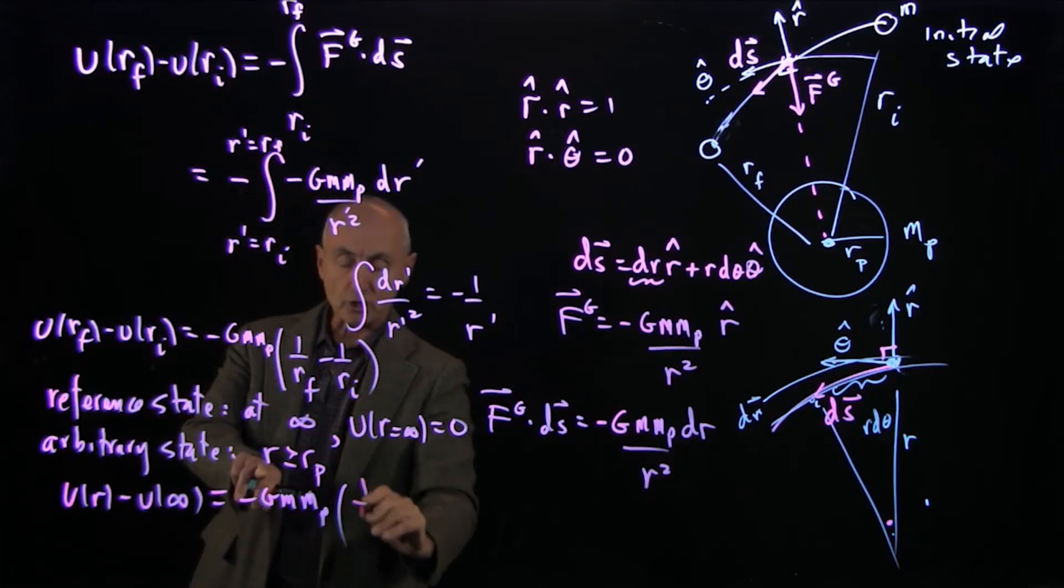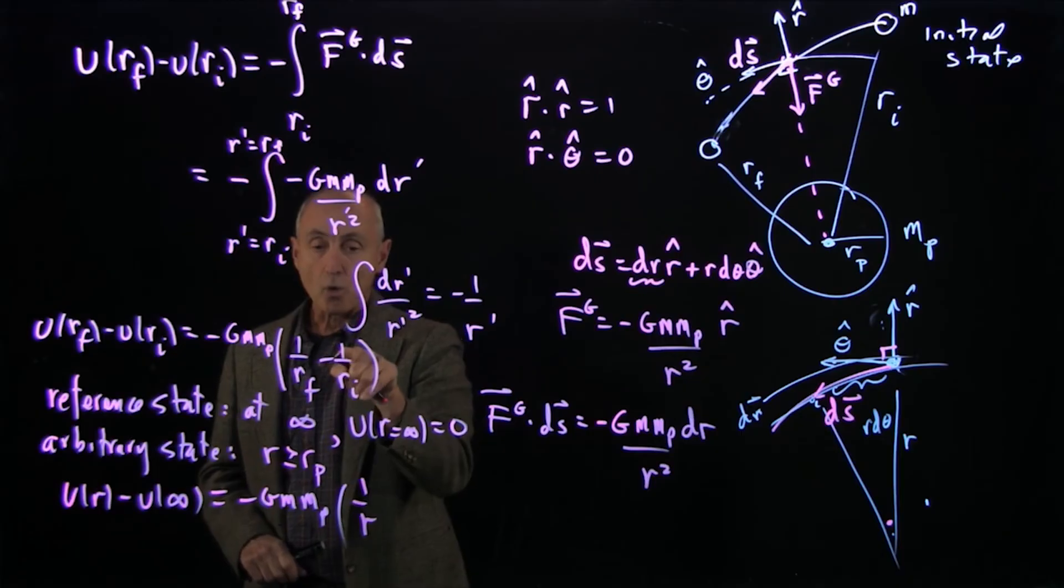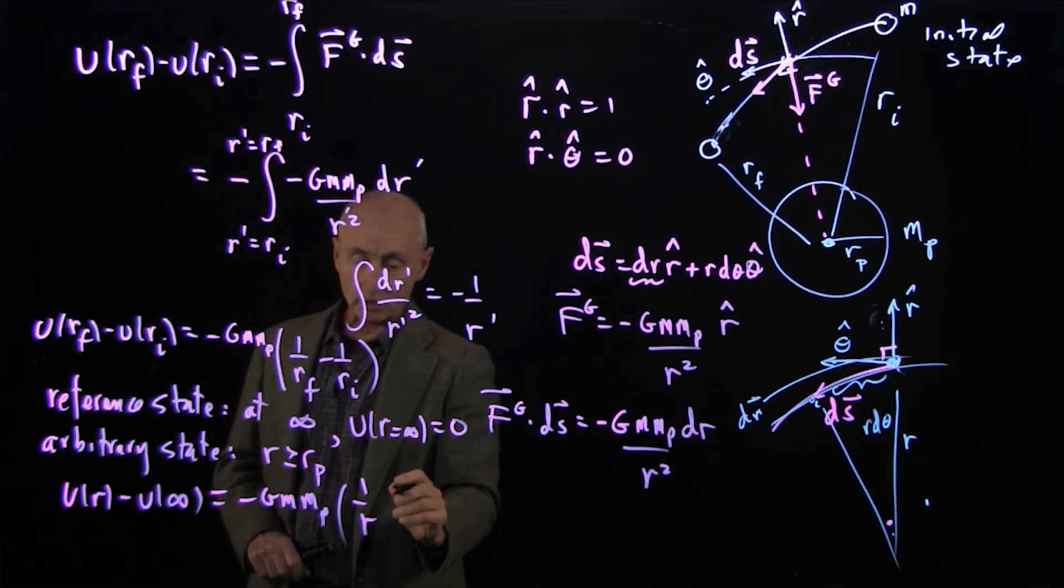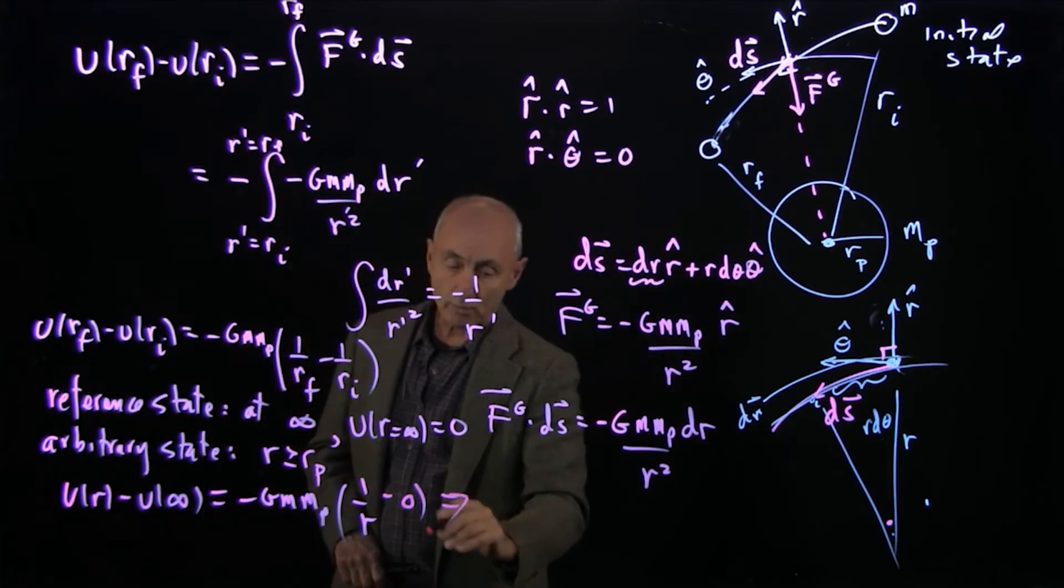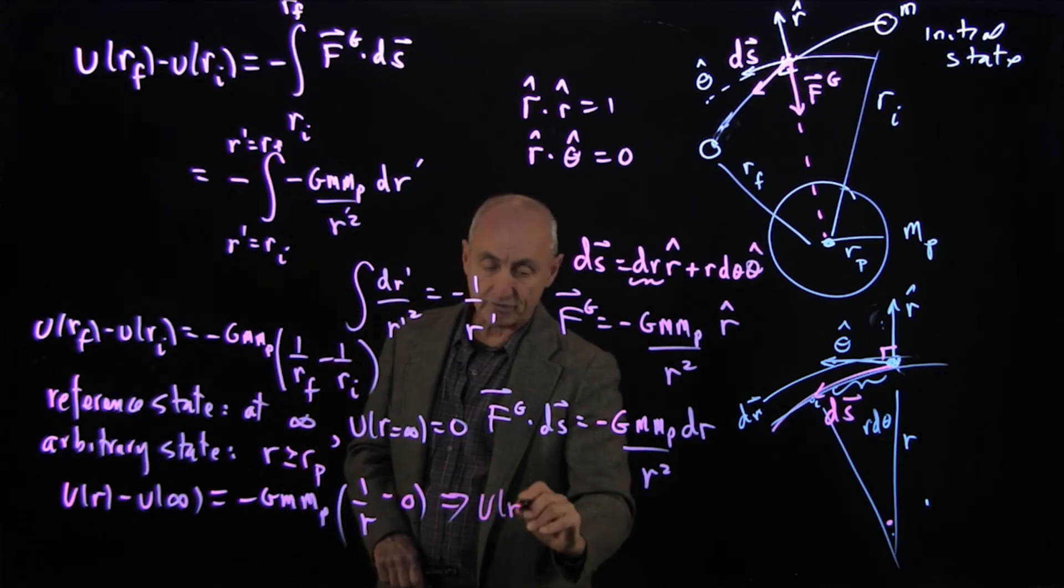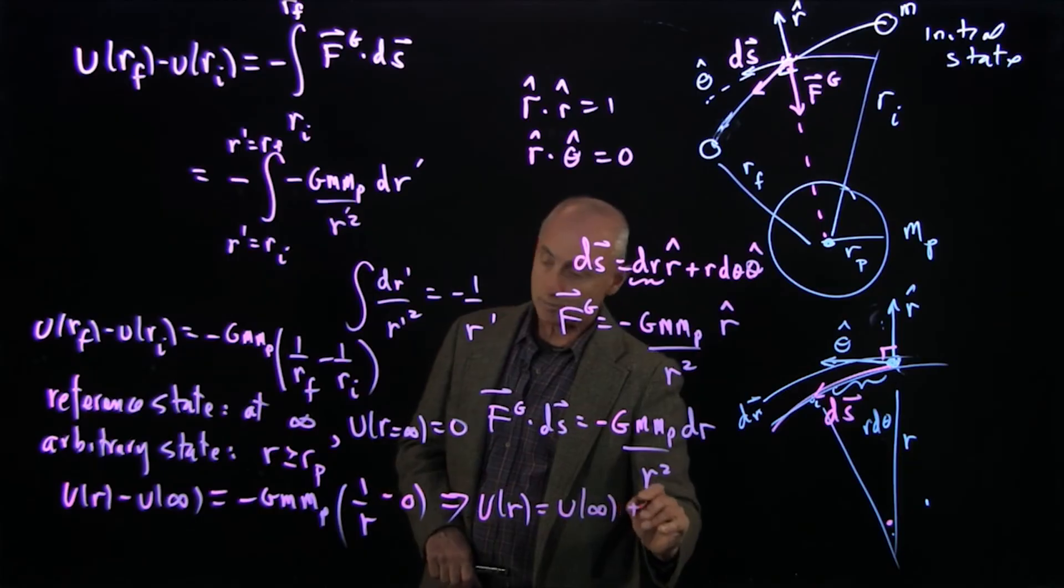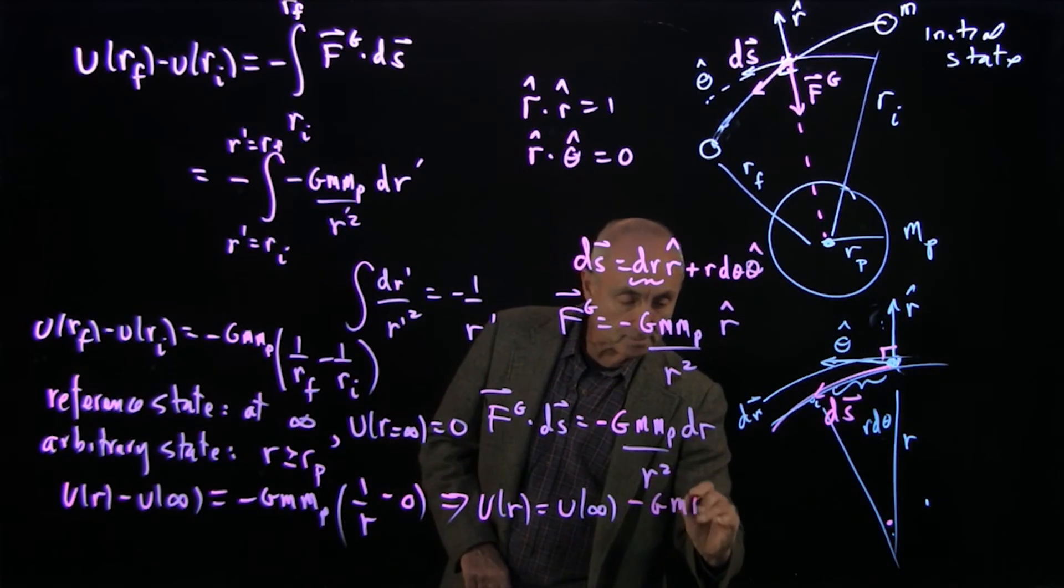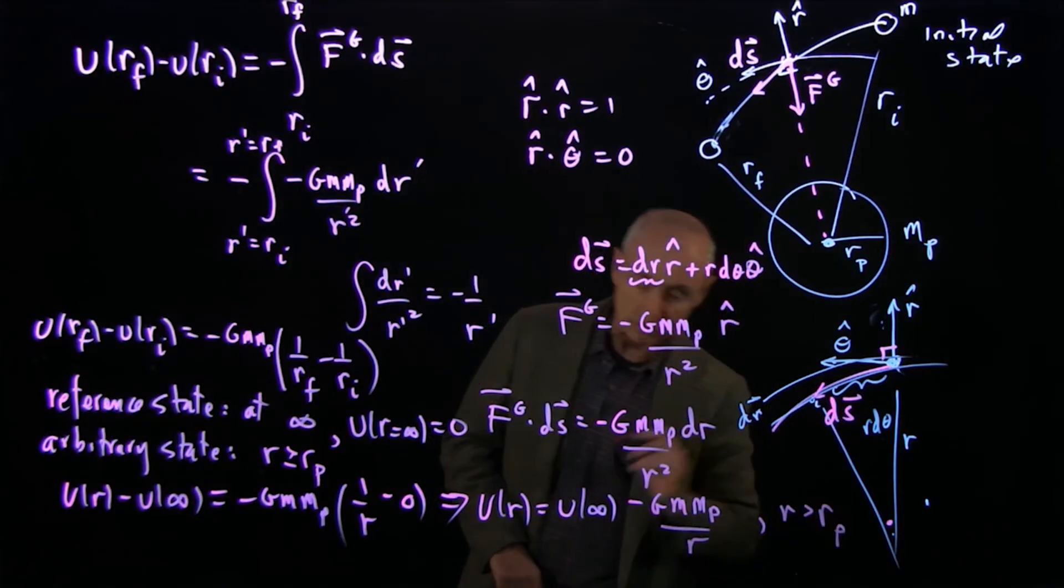And here's the reason why we choose that reference point. 1 over our arbitrary state is just minus 1 over r. But 1 over infinity, if we use the initial state as the reference point, 1 over infinity is 0. So that's minus 0. So what we get is that the potential function is equal to our reference potential plus, actually, minus G m mp over r for r bigger than rp.